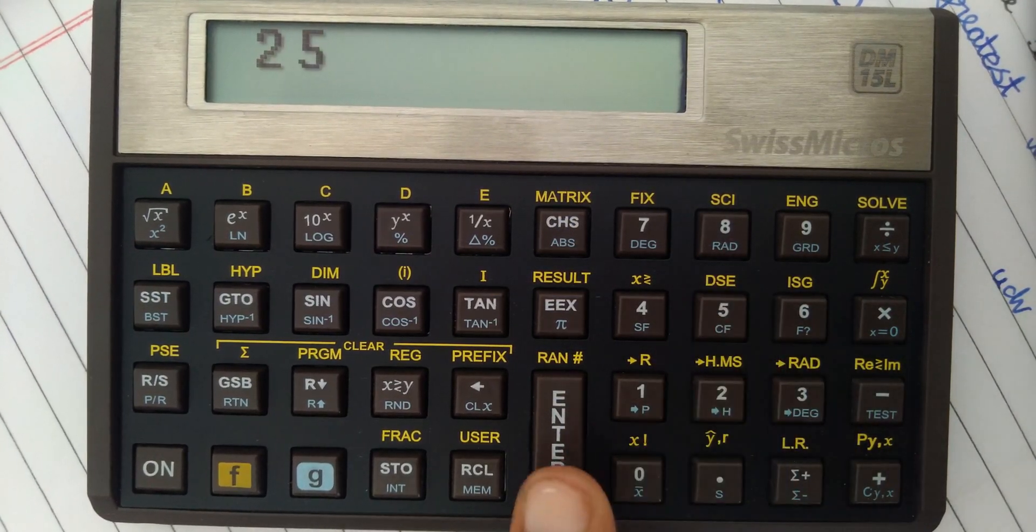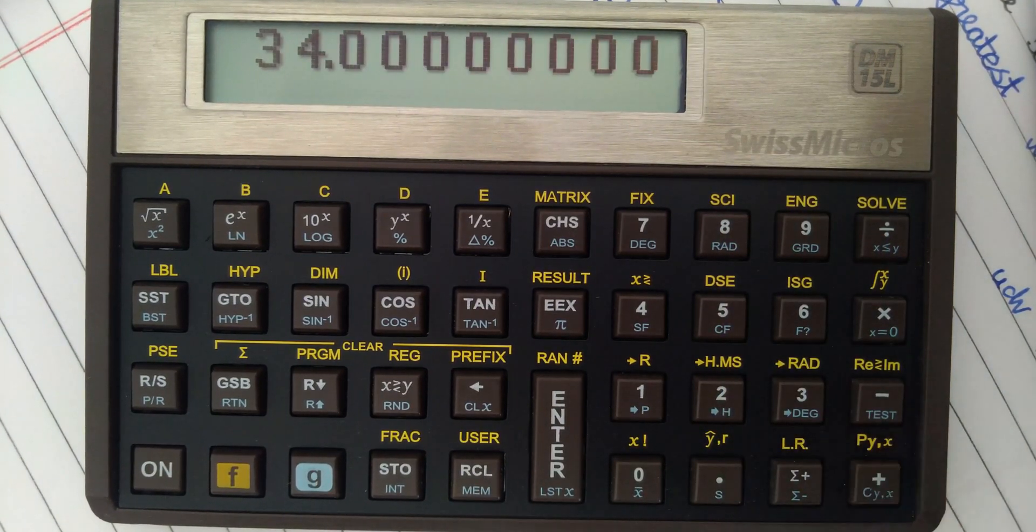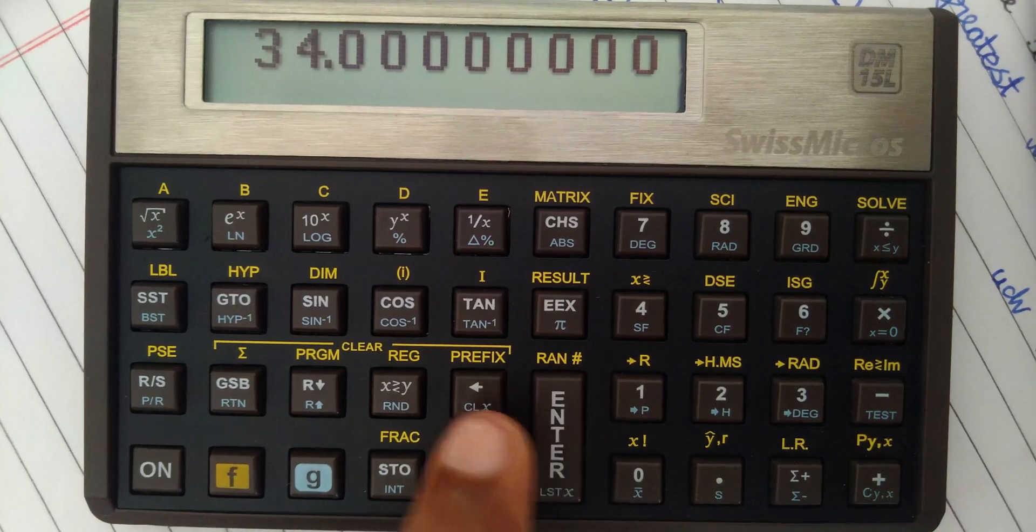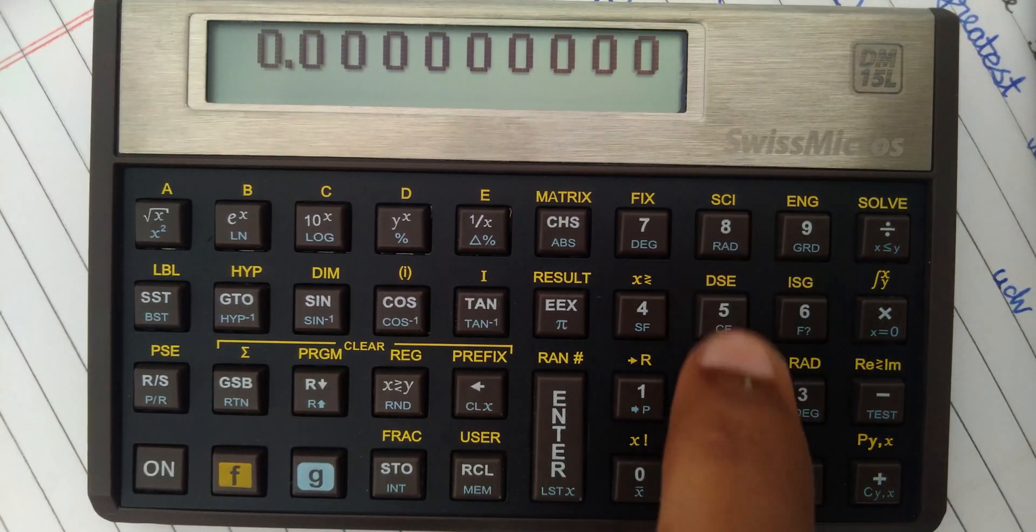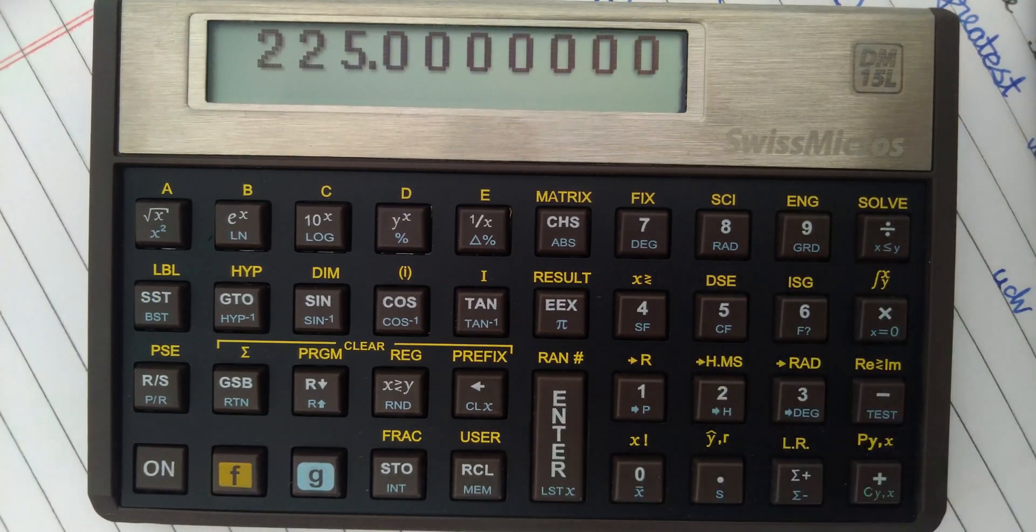So in RPN calculators, you will need to type 25 and hit enter, and type 9 and press the addition symbol to add both 25 and 9. The order is the same for multiplication, subtraction, and division.